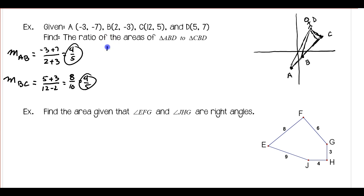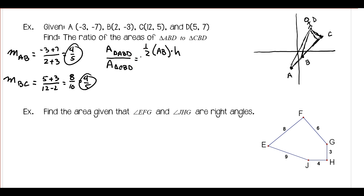The ratio of the areas — triangle ABD to triangle CBD — works out as follows: area of triangle ABD equals one half times base AB times height H, and area of triangle CBD equals one half times base BC times height H. The halves cancel and the H's cancel, so what we need are the lengths of AB and BC, which we can find using the distance formula.